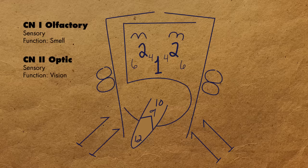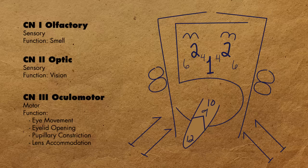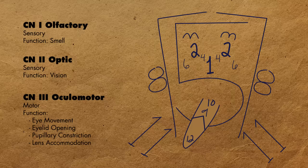Cranial nerve 3, the oculomotor nerve, like its name says, is a motor nerve for the eyes and aids in eye movement. But keep in mind that there are other cranial nerves that are also responsible for eye movement, which I will talk about in more detail in another video. But just for the sake of simplicity, just remember that cranial nerve 3 aids in the movement of our eyes.